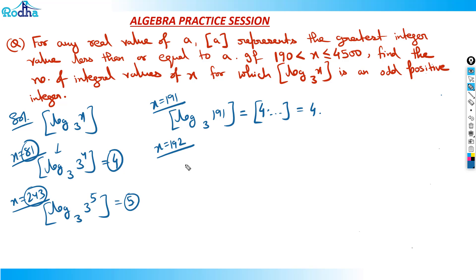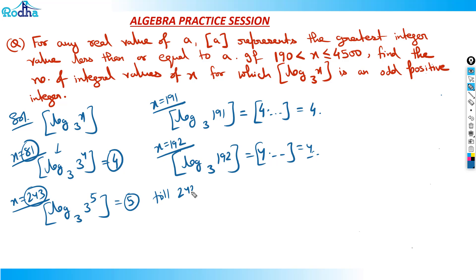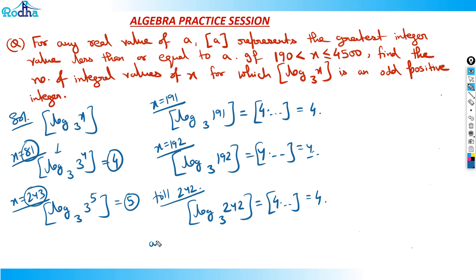The same thing happens at x = 192: log of 192 base 3 is still 4-point-something, so GIF = 4. This continues all the way until x = 242 — log of 242 base 3 is still 4-point-something, and GIF is still 4. At x = 243, which is 3 to the power 5, the log value becomes exactly 5. So from 243 onwards the value is 5, until the next power of 3, which is 729.